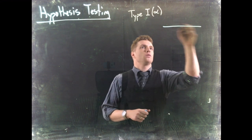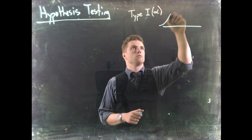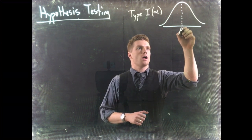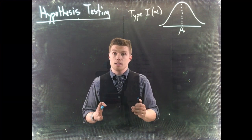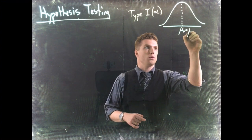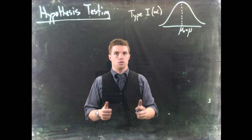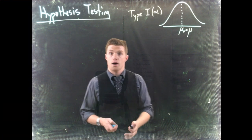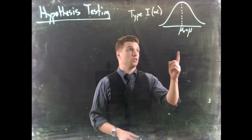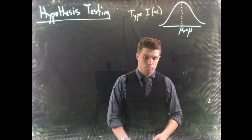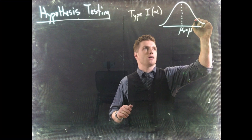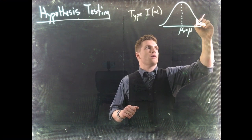We have some distribution, and we're going to say this is our hypothesized mean. The hypothesized mean is actually equal to the true mean, so the null hypothesis is in fact correct. We're doing a hypothesis test, a greater-than test, and we'll set alpha equals 0.05 since it's common.